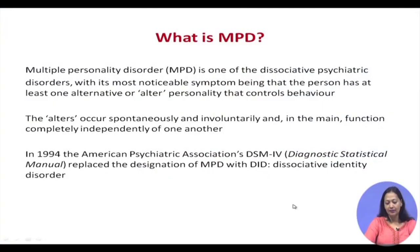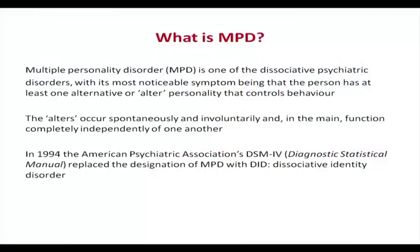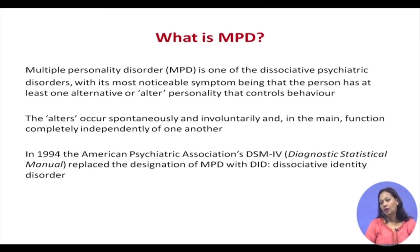Multiple personality disorder, or dissociative identity disorder, is where an individual has one or more alternative — or alter — personalities that control behavior. The alters can be more than one, they occur spontaneously and involuntarily, and they function completely independently of each other. As you will see with Eve White and Eve Black, they are completely independent, and most of the time Eve White is unaware of Eve Black's actions.